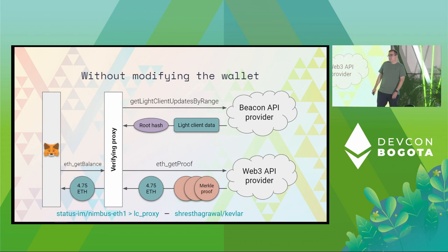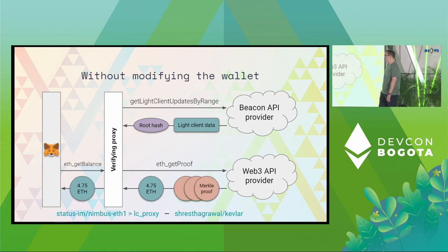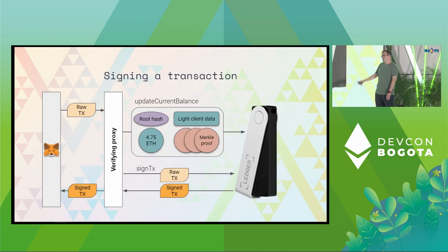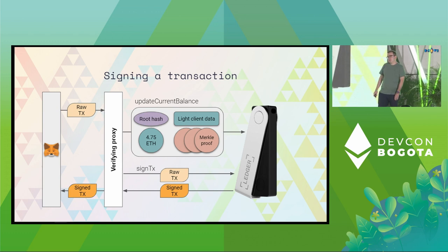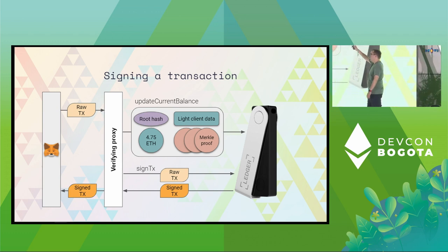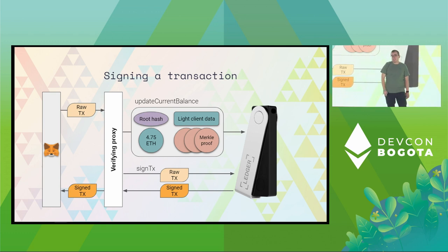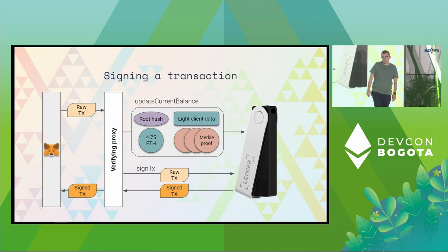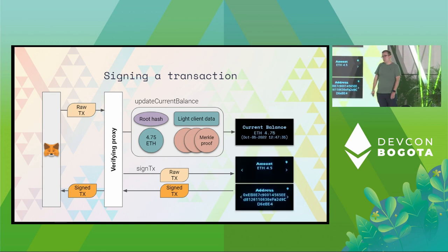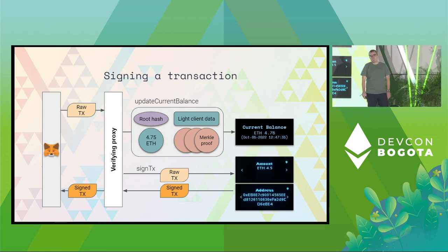One piece is still missing for the Ledger device: how can we get it to show the current balance? This would require a modification to the Ledger software, but it could be done by dumping all of this data to the Ledger. It uses the light client data to update to the latest public keys, obtains the latest root hash, verifies the balance using the Merkle proof, and then displays the balance with a timestamp so you can verify that the transaction is really what you want to do.